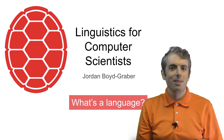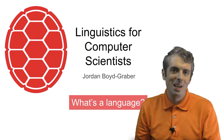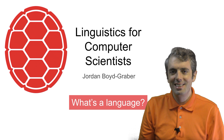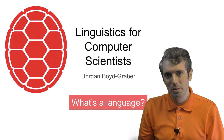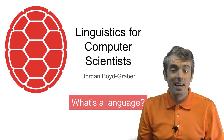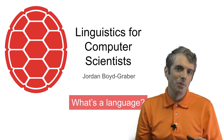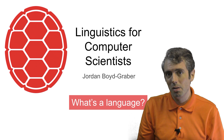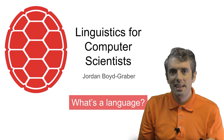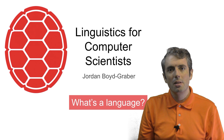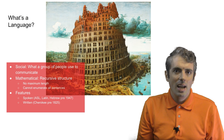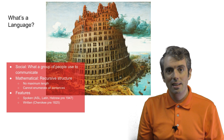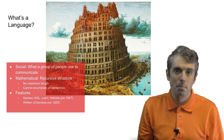We're going to be talking about natural language processing. But what actually is a natural language? A natural language, in contrast to a programming language which is artificial, is the mechanism that people use to communicate with each other. You may have heard about natural languages such as English, Chinese, French, or Spanish.